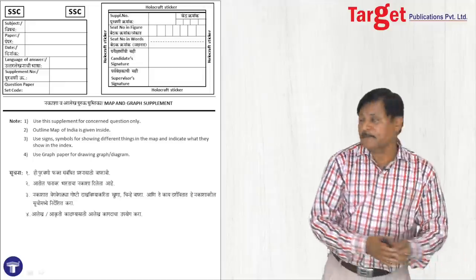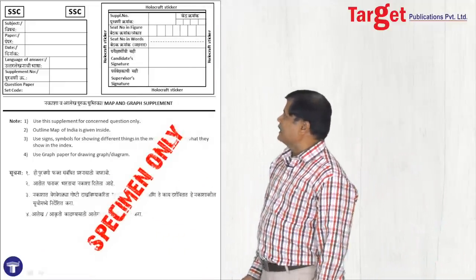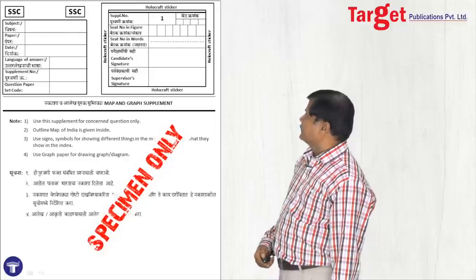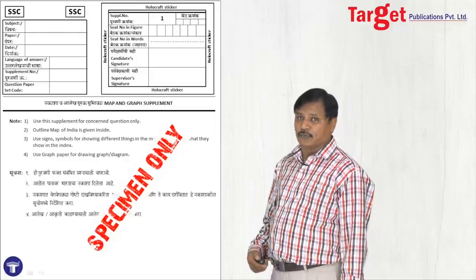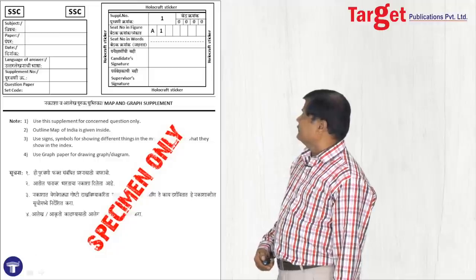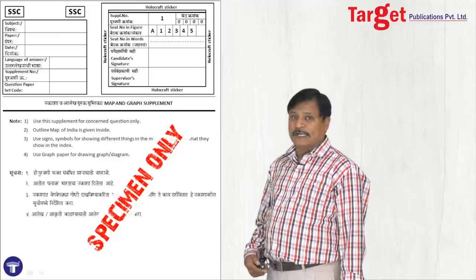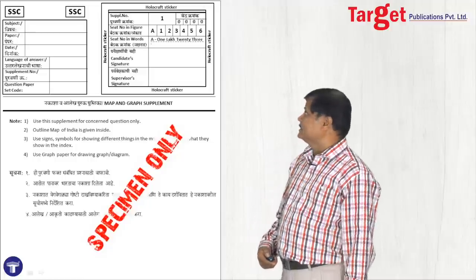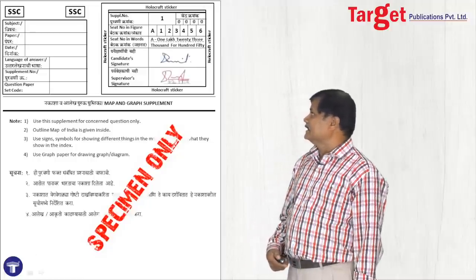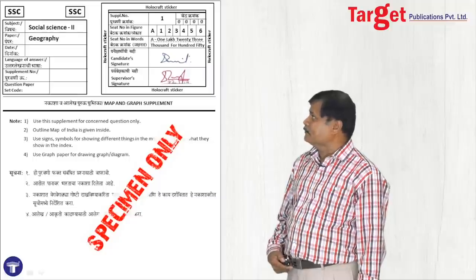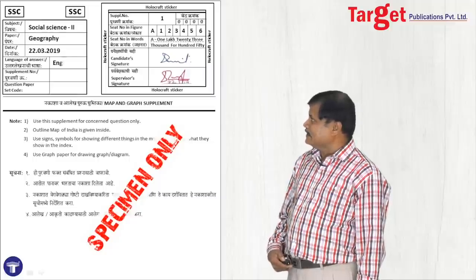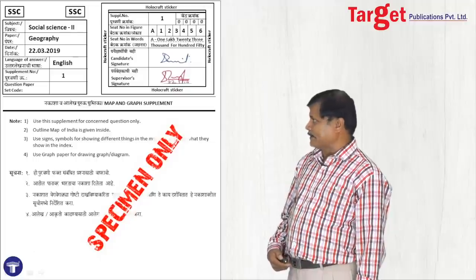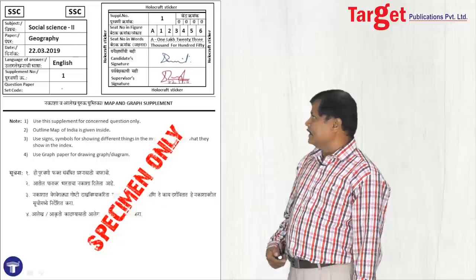On the first page you fill the details: supplement number — map is supplement number 1. Then the center, your roll number in digits and in words, your signature, supervisor's signature, subject — Social Science 2, then Geography, date, language of answer — English, and supplement number 1. Then carefully you have to stick the holograph sticker.